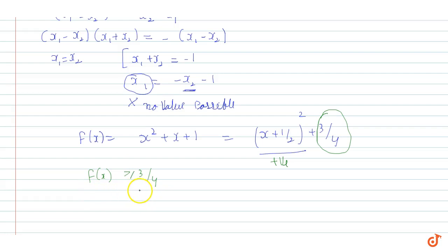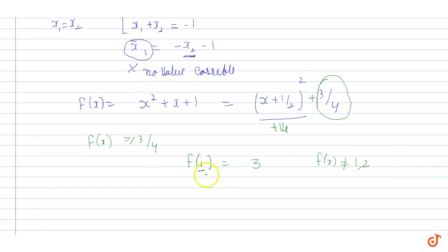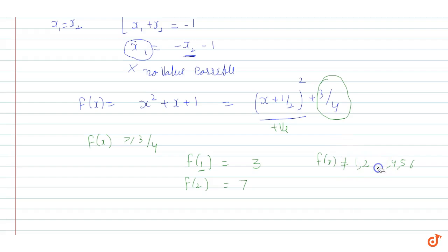Now, f(1) = 1 + 1 + 1 = 3, which is the minimum value of f on ℕ. This means f(x) never equals 1 or 2. Similarly, f(2) = 4 + 2 + 1 = 7, so the values 4, 5, and 6 are also skipped. The range does not cover all natural numbers.